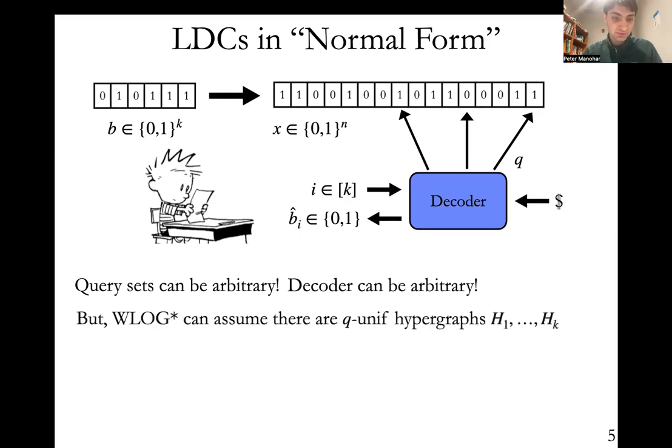Even if we knew that these query sets had a lot of structure, we don't know how the decoder is producing this estimate b-hat_i. This decoder can really be arbitrary. So it's natural to want to massage this generic LDC into an LDC that has a lot of structure, because then we can put the LDC in a so-called normal form that will make it a lot easier to analyze. This is done in prior work, which shows that without loss of generality, we can assume that the following holds. There are some asterisks that are not really important, especially for the purposes of this talk. But essentially, without loss of generality, you can assume that there are q-uniform hypergraphs h_1 through h_k.